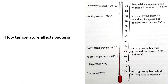Now, how temperature affects bacteria — we're recapping back to enzymes. From a freezer temperature, the bacteria do not die but become inactive, because bacteria can only survive in room temperatures. Room temperature is between 20°C to 37°C, which are living conditions for bacteria. Most growing bacteria grow well between 10°C to 48°C, which is roughly the range of room temperature scale.